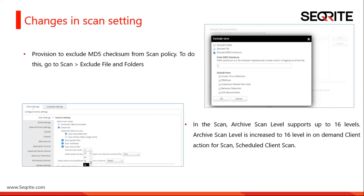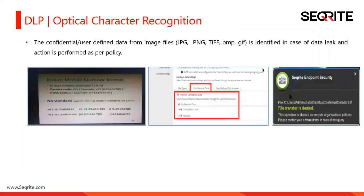Regarding DLP in Endpoint Security, we have a lot of good changes. One change is optical character recognition. Confidential or user-defined data from image formats including JPG, PNG, TIF, and BMP can now be scanned. We can ensure no data leak is taking place for such file types containing sensitive data, and any attempt to transfer data through these file formats will be denied.